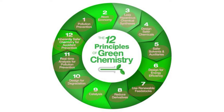Finally, number twelve is inherently safer chemistry for accident prevention. This involves looking at the substances used in the chemical process and choosing forms that minimize the potential for accidents, including releases, explosions, and fires. So those are our 12 principles of green chemistry.